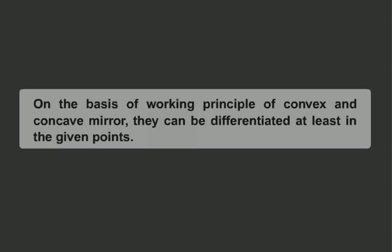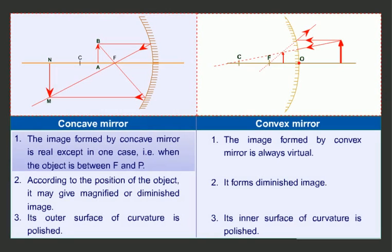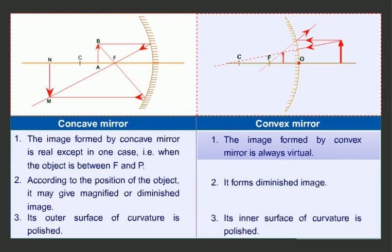Students, on the basis of the working principle of convex and concave mirrors, they can be differentiated in the given points. The image formed by a concave mirror is real except in one case - when the object is between F and P. Whereas the image formed by a convex mirror is always virtual.